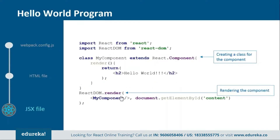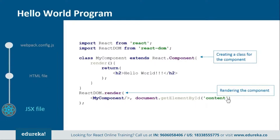In the JSX file, you need to import React and ReactDOM from their respective directories, then create a component — called MyComponent or any name you choose — which should extend React.Component, because in React everything is a component. Inside it, create a render function to return the HTML representation. At the end, render MyComponent over the div tag used in the HTML file, referencing it by its id, which is 'content'.